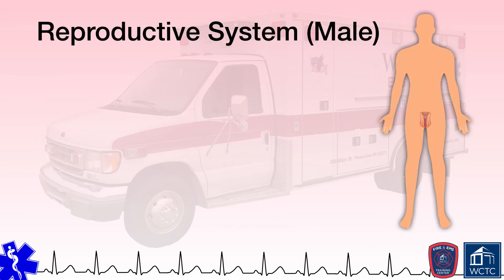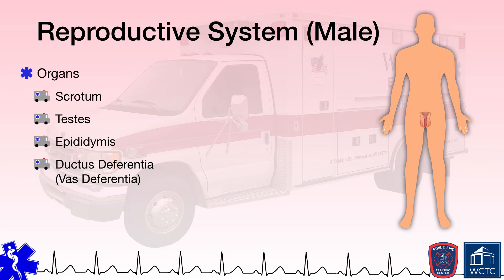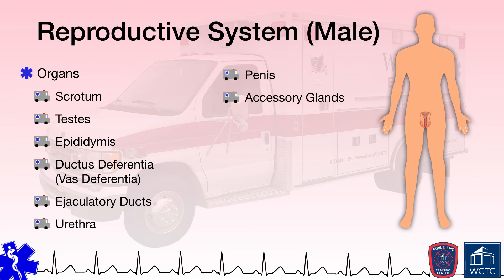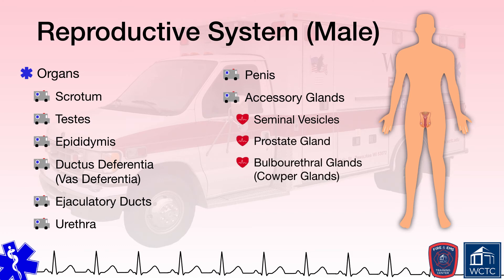The male reproductive system includes a scrotum, testes, epididymis, ductus deferentia, ejaculatory ducts, urethra, penis, and some accessory glands like the seminal vesicles, prostate gland, and bulbourethral or Cowper glands. The reproductive system in the male is designed for producing sex cells, male gametes or sperm, and delivering them to the female for egg fertilization.